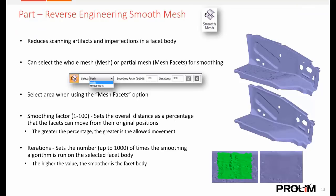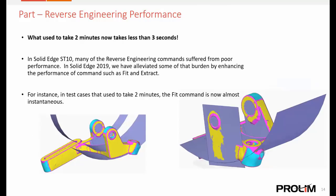Some enhancements were also made to the reverse engineering aspect of Solid Edge 2019. There's a new command to help smooth out any imported mesh geometry, helping with scanning artifacts and imperfections in a faceted body — useful if you're using a 3D scanner, bringing in that data and cleaning it up to make it smoother. Performance of reverse engineering has also been greatly increased. On average some things took two to three minutes in ST10; they can now take less than three seconds in Solid Edge 2019.